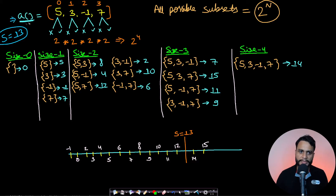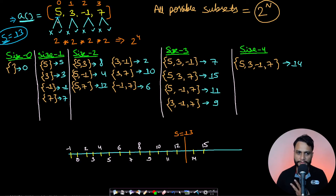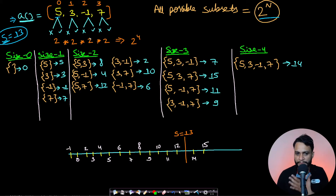Taking the same example — array [5, 3, -1, 7] with target sum 13 — a simple way would be to generate all possible subset sums. A subset is similar to a subsequence where each item has two choices: it can be excluded or included. So if each item has two choices, the total number of subsets is 2 to the power n. With four elements, the total number of different subsets is 2 to the power 4.